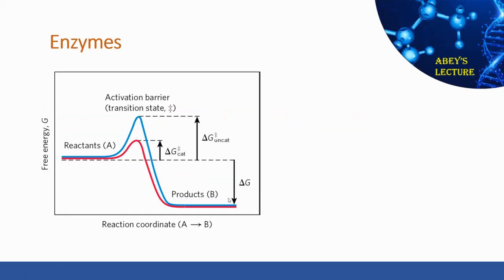Enzymes catalyze biological reactions, so they increase the rate of the reaction by decreasing the activation energy barrier. If we look at the uncatalyzed and catalyzed reactions, the catalyzed reaction has a lower activation energy and the enzyme stabilizes the transition state. Enzymes do not affect the concentration of reactants or products; they increase the reaction rate by making the reaction environment favorable and decreasing the activation energy barrier.